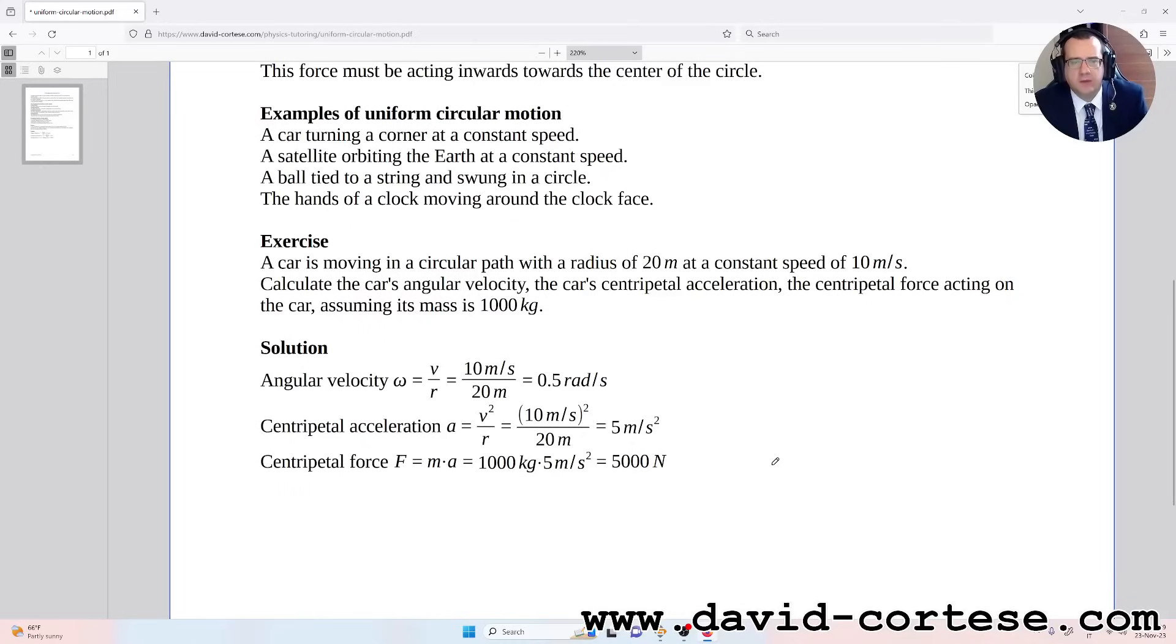The angular velocity omega is equal to v over r, that is 10 meters per second over 20 meters. The centripetal acceleration a equals v squared over r, that is 10 meters per second squared over 20 meters, which equals 5 meters per second squared. And the centripetal force F equals m times a, that is 1000 kg times 5 meters per second squared, that is 5000 newtons.